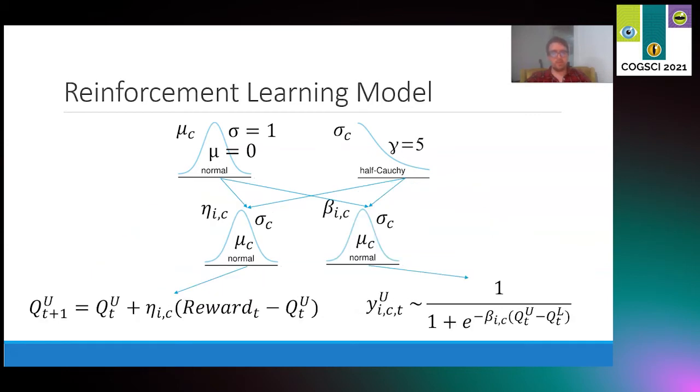For our choice data, we developed a similar hierarchical Bayesian model, but for reinforcement learning. Here we used two free parameters: eta learning rate and beta sensitivity to noise. Both of these vary between individuals and conditions as well. The learning rate informed a simple Q-learning update rule in which the expected value of some option, say the door representing the upper bound on the DDM, would be updated on each trial with a reward prediction error of the previous trial scaled by some learning rate. Higher rates would mean bigger swings in reward expectation following feedback.